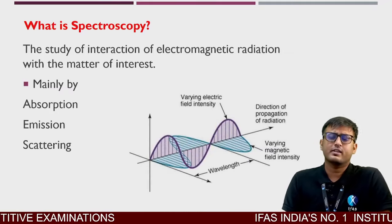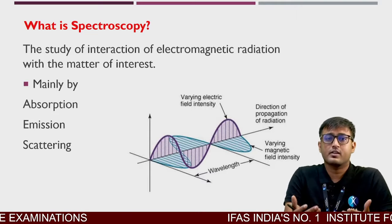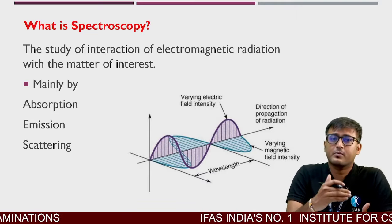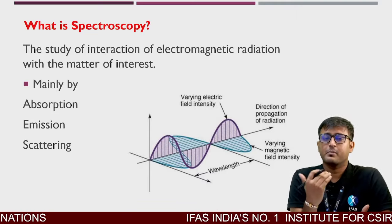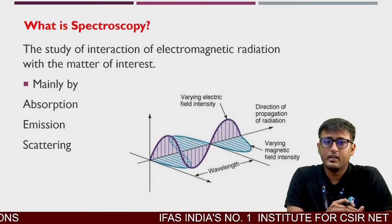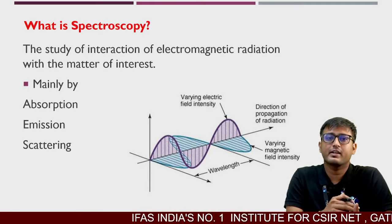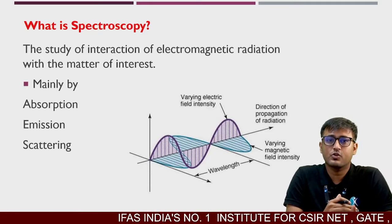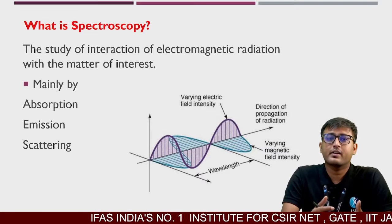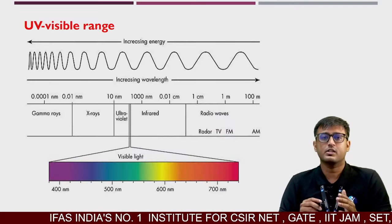Electromagnetic radiation is a transverse wave with an electric vector and a magnetic vector, and we can interact with it.